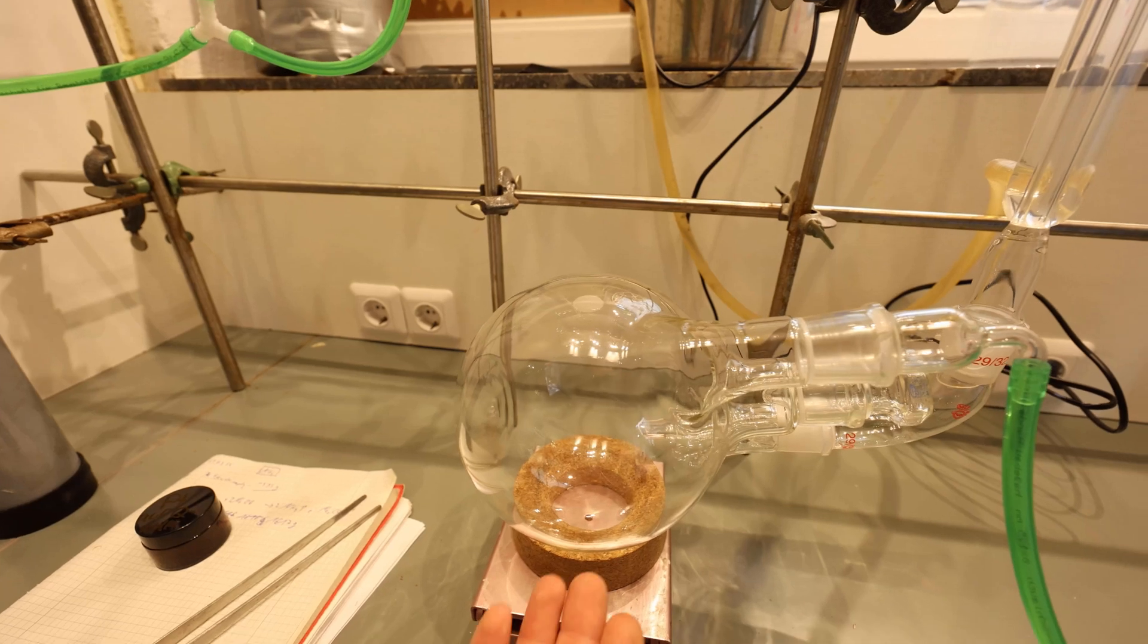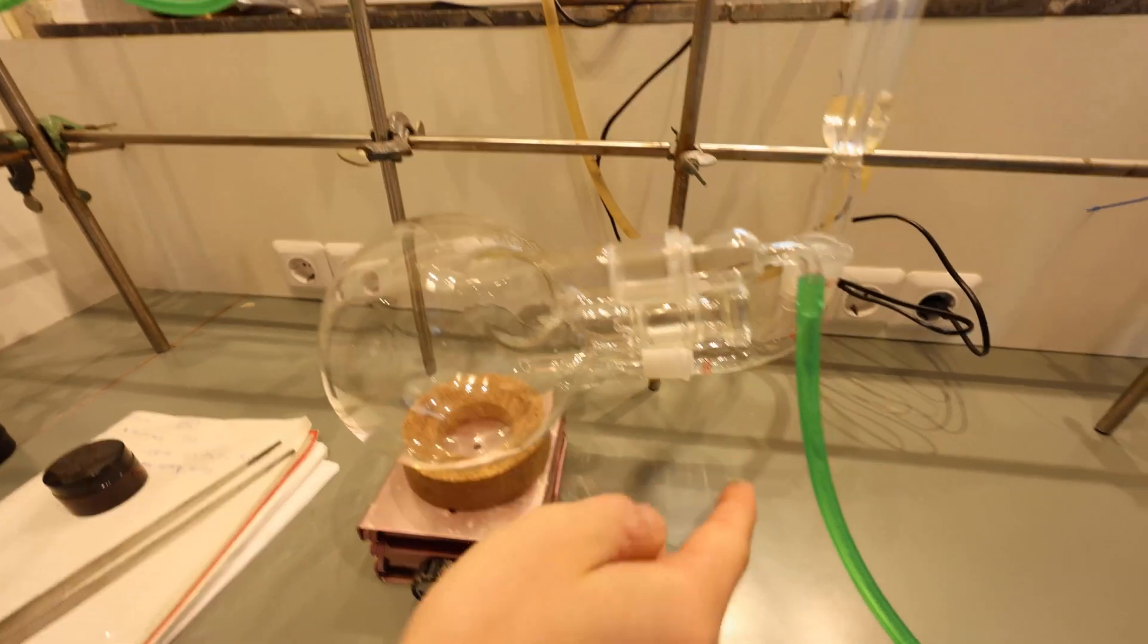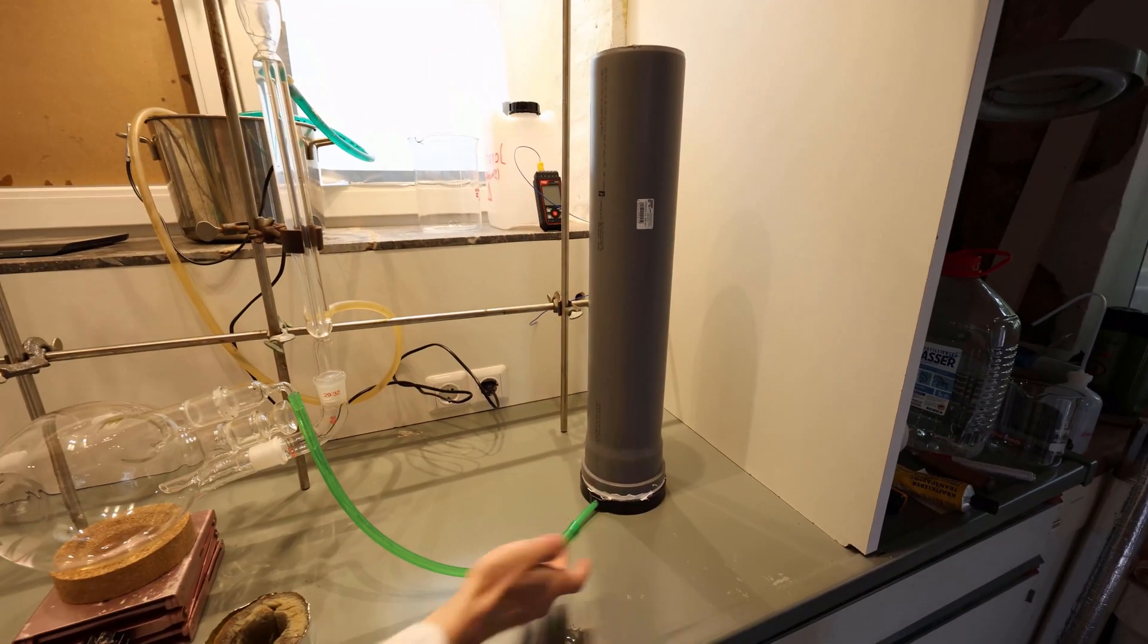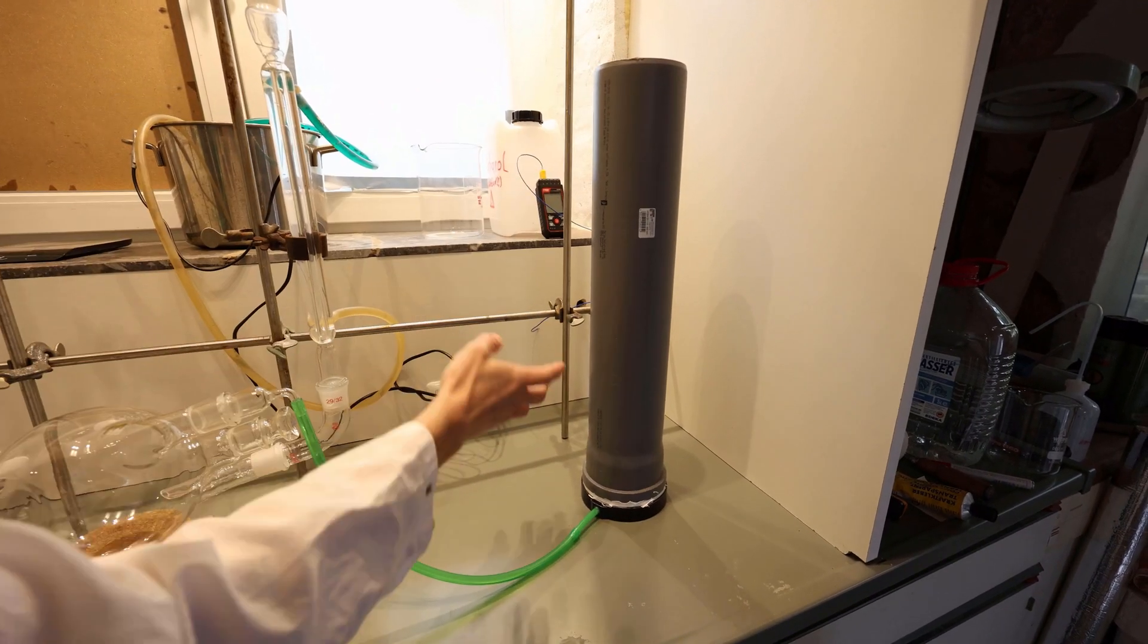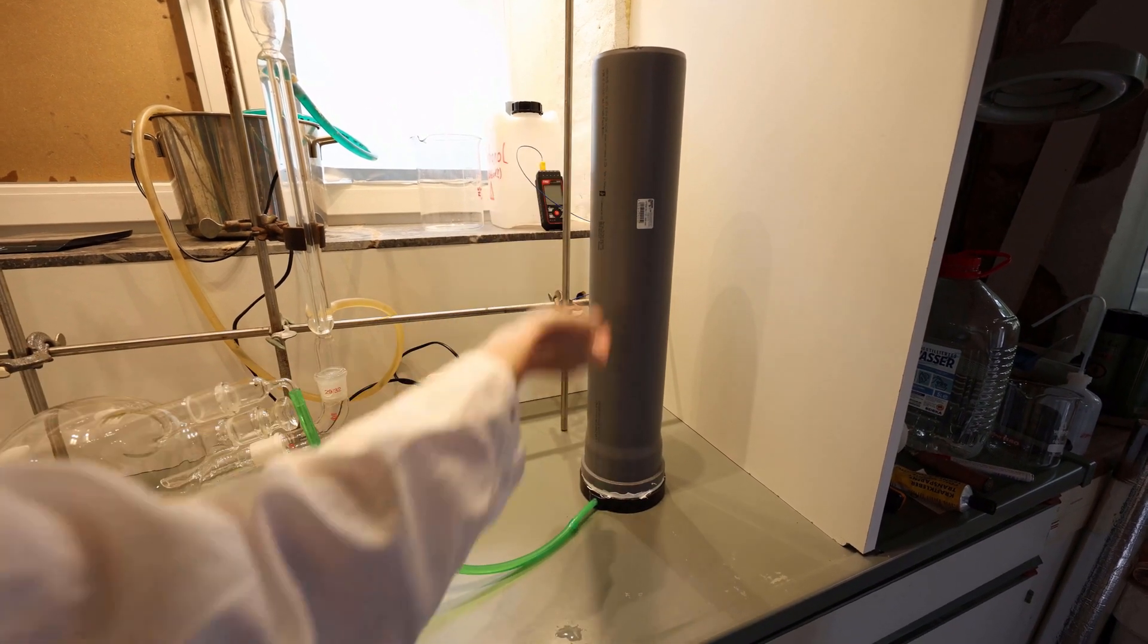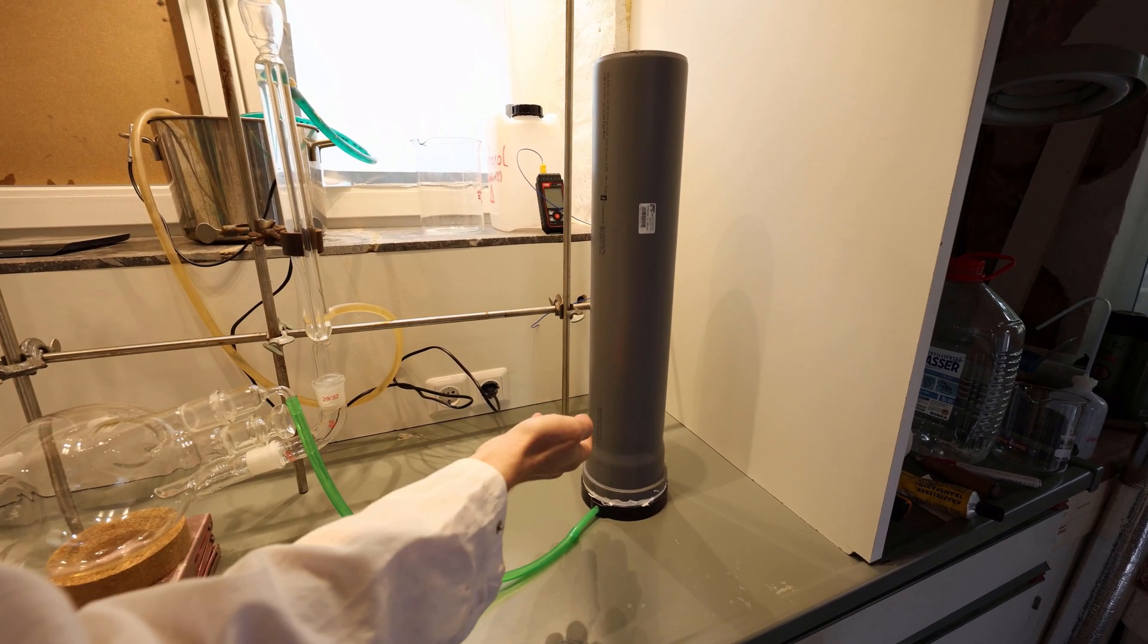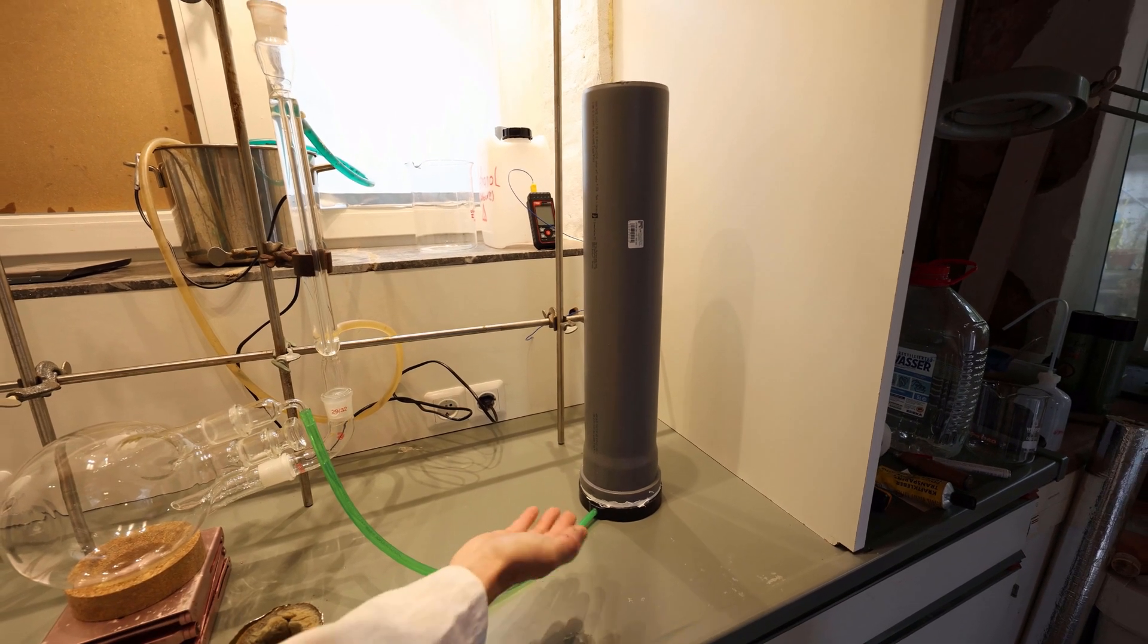It goes in here, through here into this aquarium bubbler thing, and we'll put some distilled water into this. This will bubble the NO2 in here and it will react with the deionized water in there to make nitric acid.